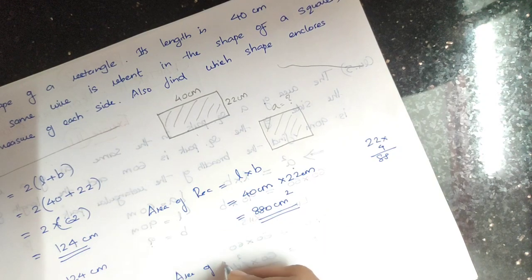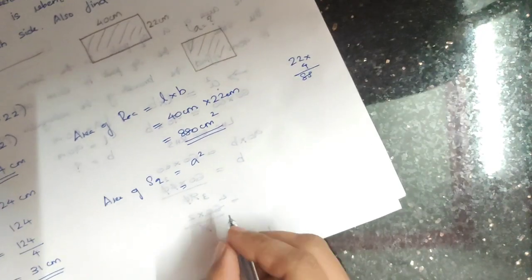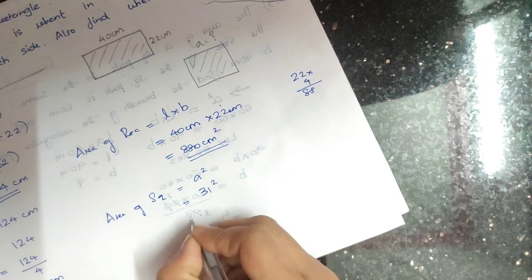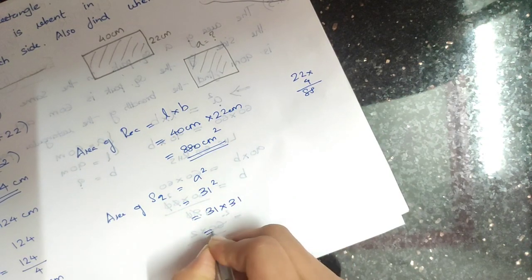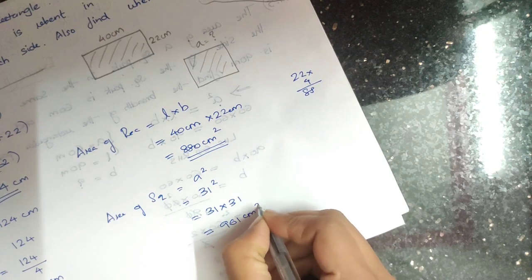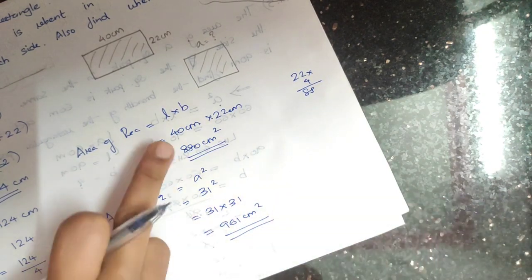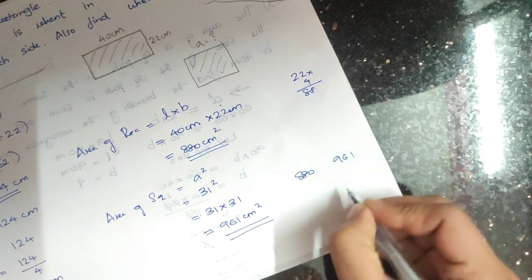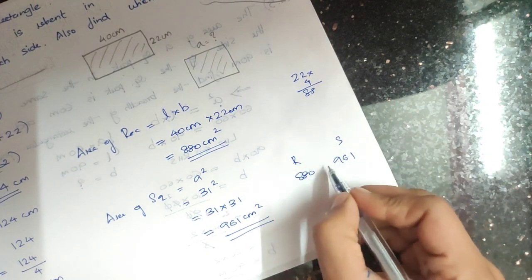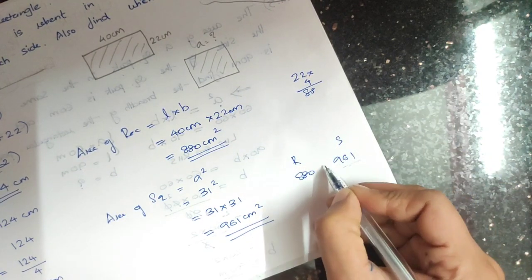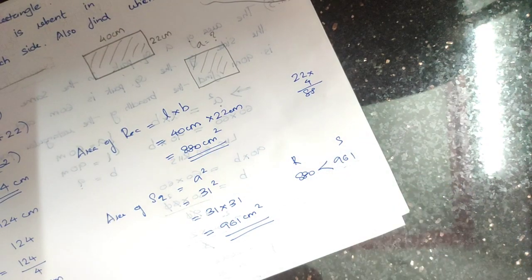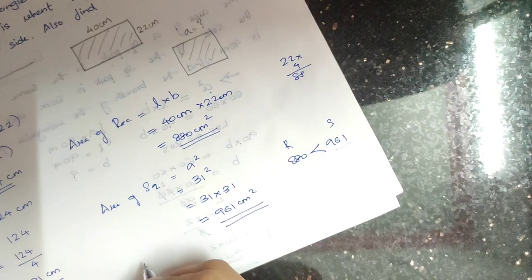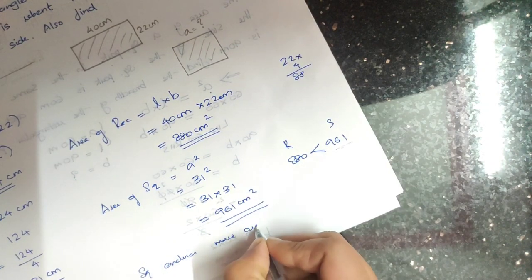Area of square equals A squared equals 31 into 31 equals 961 cm². Comparing: rectangle area is 880 cm² and square area is 961 cm². Since 961 is greater than 880, the square encloses more area.